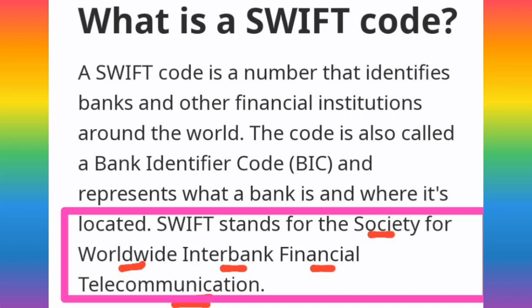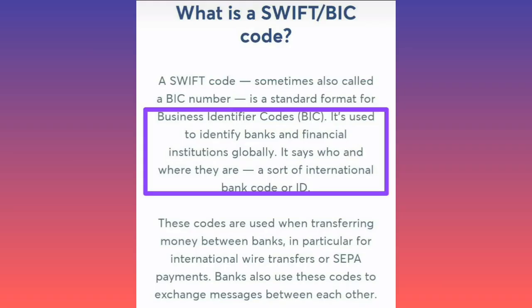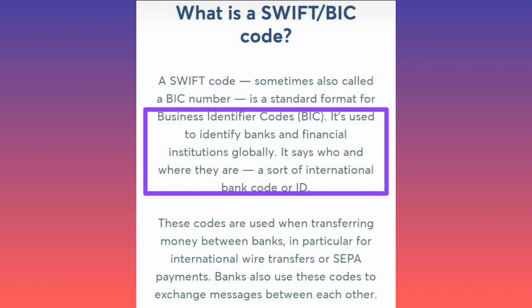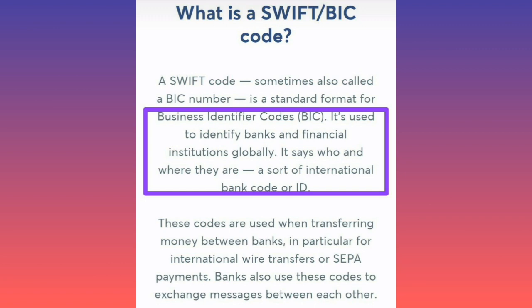What is the use of the SWIFT code? The SWIFT code, or the BIC code — look at where I have shaded with the purple — is used to identify banks and financial institutions globally. It sees who and where they are. It is a sort of international bank code or ID.